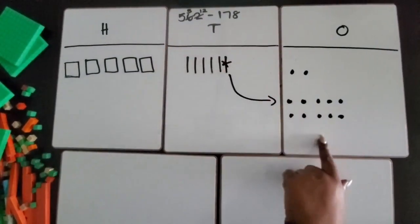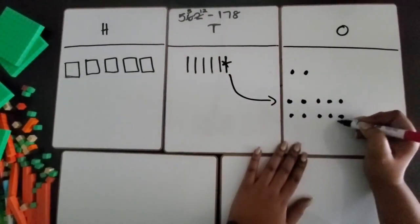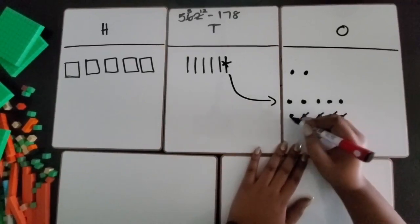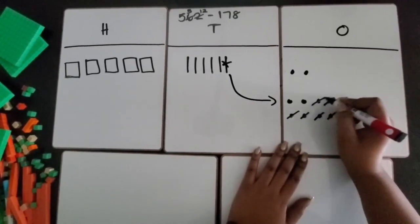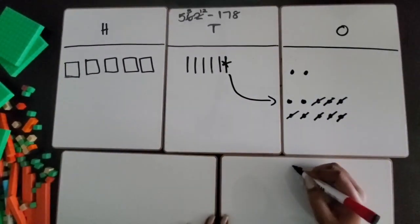So now I have 12 ones. I can subtract 8 ones. 1, 2, 3, 4, 5, 6, 7, 8. I still have 4 ones remaining.